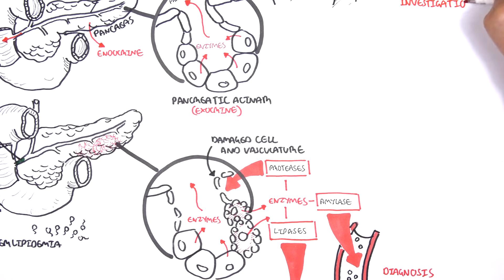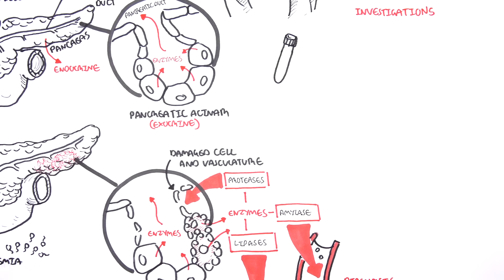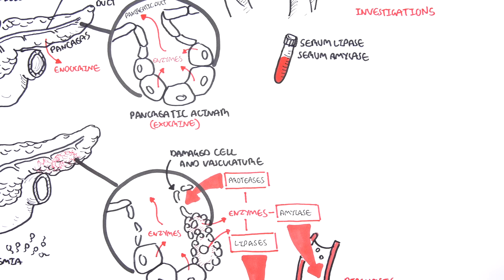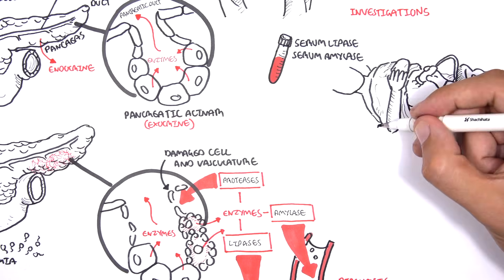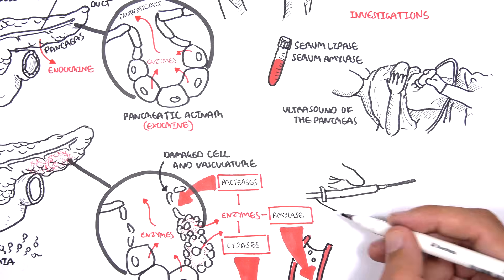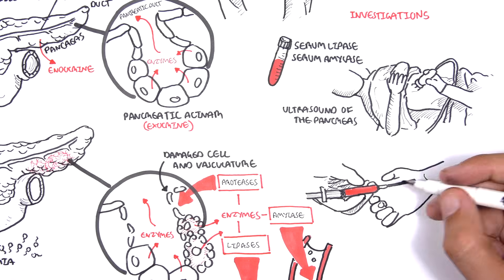Investigations to be performed in suspected acute pancreatitis include serum amylase and lipase, which as mentioned increase in the blood. Serum lipase is more specific for the pancreas. An ultrasound of the pancreas can also be performed and an arterial blood gas.